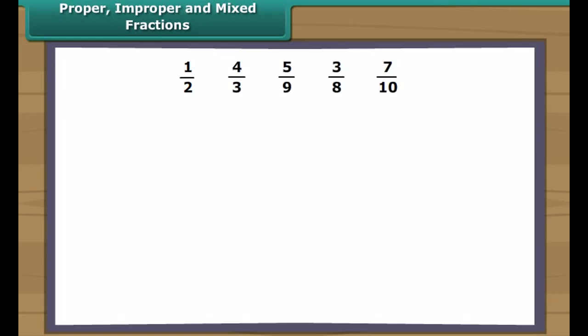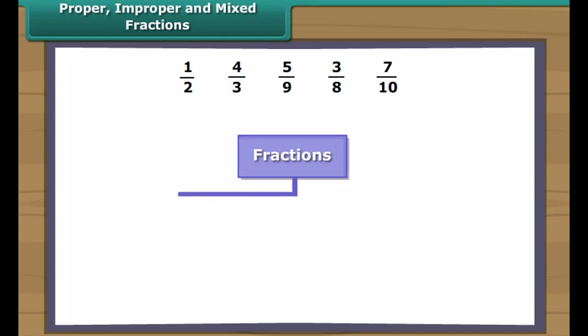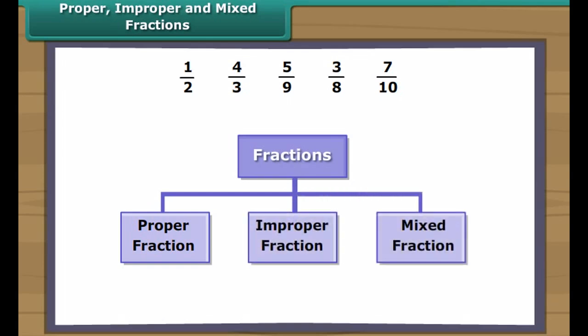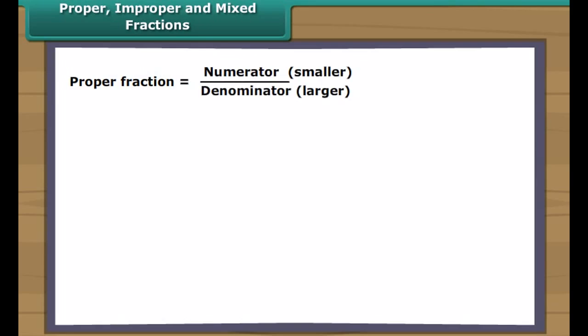We know that a fraction is a number representing a part of a whole. Fractions are of three types: proper fraction, improper fraction, and mixed fraction. In a proper fraction, the numerator is less than the denominator.